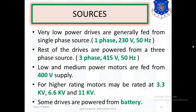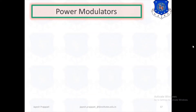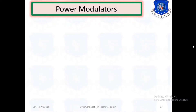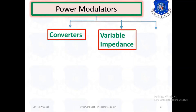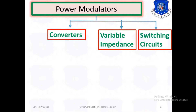The power modulator is the most important part of electrical drives, also called a power converter. It converts electrical energy from the source to the motor as per the requirement of the load. Power modulators can be classified in three ways: converters, variable impedance, and switching circuits.